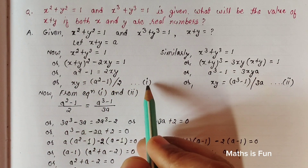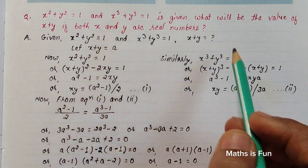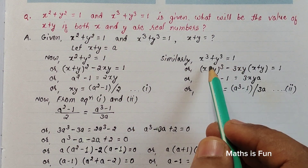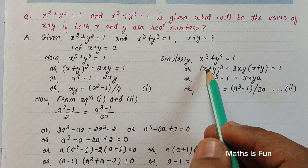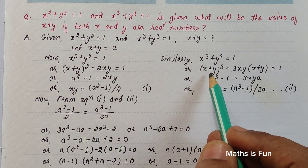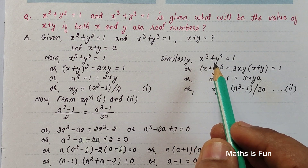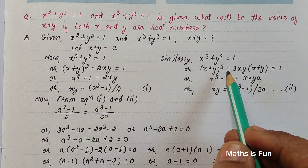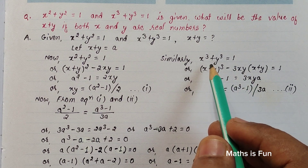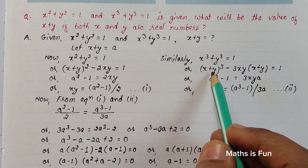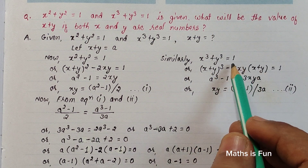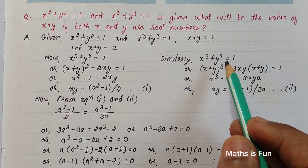Similarly, we go to our second equation: x³ + y³ = 1. We use the formula (a + b)³ = a³ + b³ + 3ab(a + b). Using that, x³ + y³ = (x + y)³ - 3xy(x + y), because the extra terms cancel with the cube expansion.